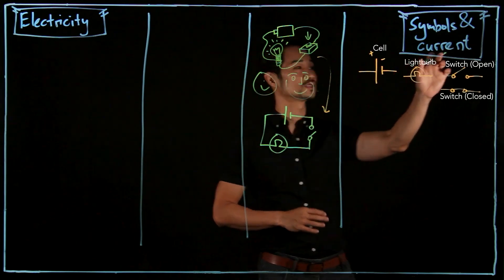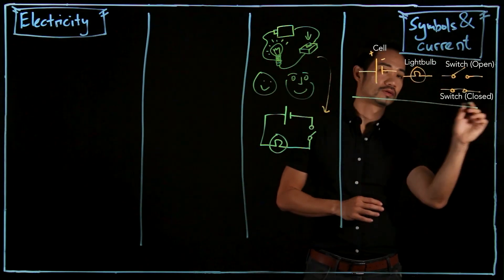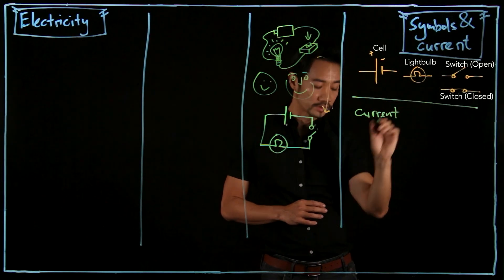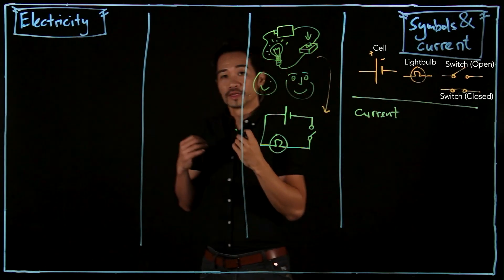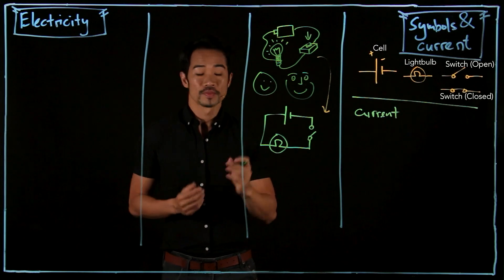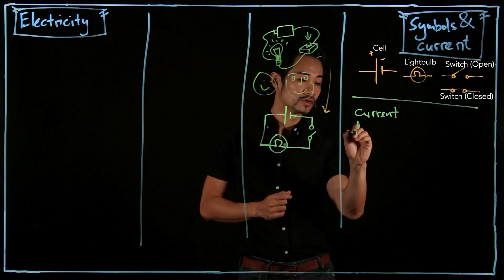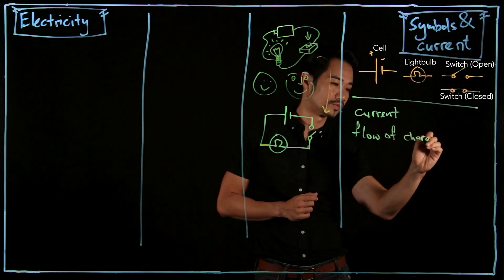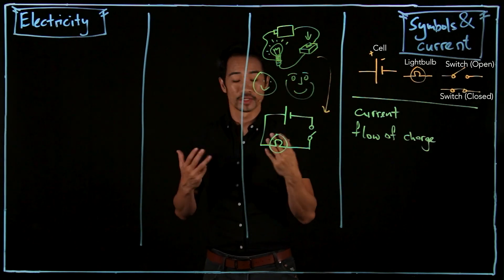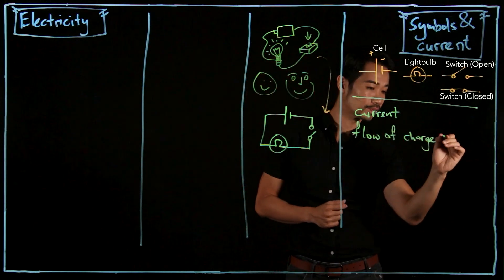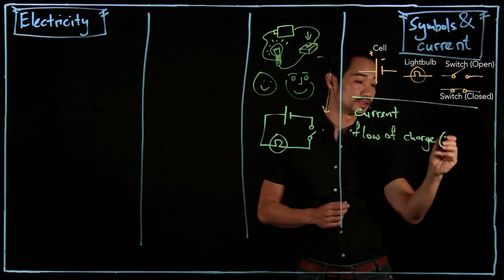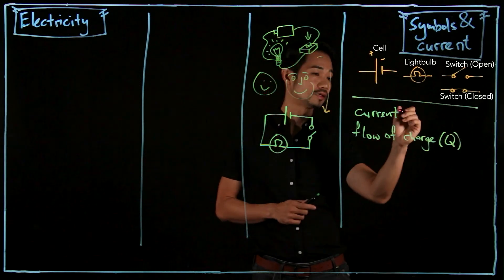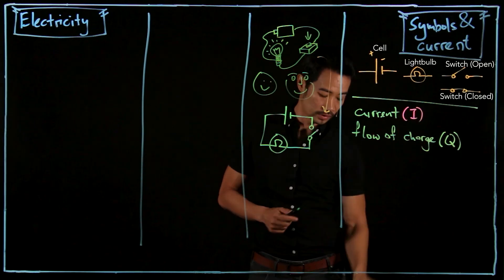Next concept to go through is the concept of current. So what is current? We learn in static electricity about electric charge. So current is the flow of charge. It is the rate of flow of electric charge. Charge is measured in Coulombs, and the symbol that we use is Q. Current, on the other hand, is I.